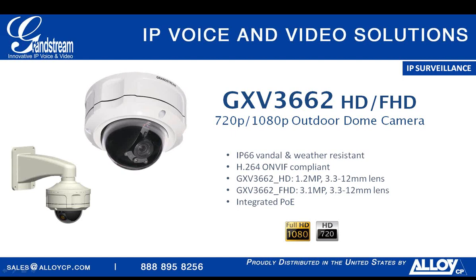The GXV3662 is one of our longer-running dome camera models, available with a flush mount, wall mount, or a third option — purchased separately, unlike our other cameras which include all mounting hardware in the box. It is variable focal with a 3.3mm to 12mm adjustable lens, IP66 certified, and notably vandal-proof and tamper-proof — built with tamper-proof material that can withstand significant physical abuse.